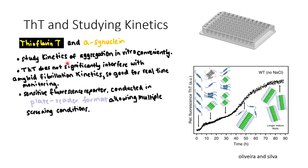You can study the kinetics of aggregation in vitro conveniently. You basically conduct your kinetic experiments in these 96-well plates and you can screen for multiple different conditions which could affect your amyloid aggregation kinetics.